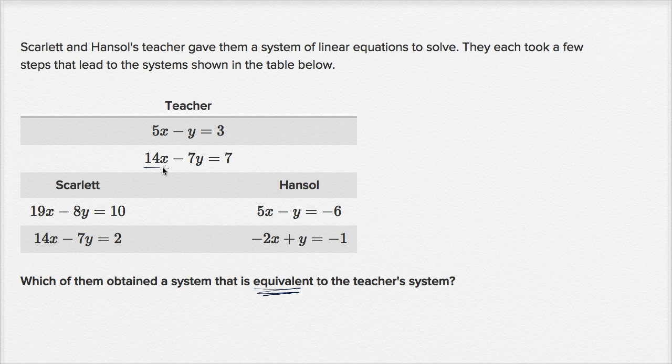So this is interesting, because the ratio between x and y is the same, but then your constant term is going to be different. And I would make the claim that this alone tells you that Scarlett's system is not equivalent to the teacher. And you're saying, well, how can I say that?